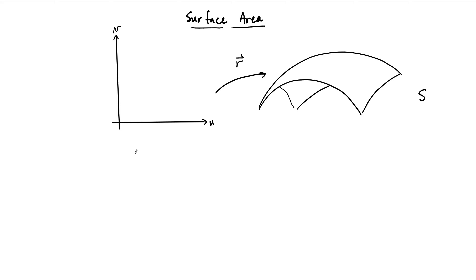In this video, we'd like to talk about the surface area of a parametric surface, or a parametrized surface, in R3. I've started this video by sketching just a surface floating in R3 here. There are some coordinate axes for it, so this is the x, y, z coordinates.